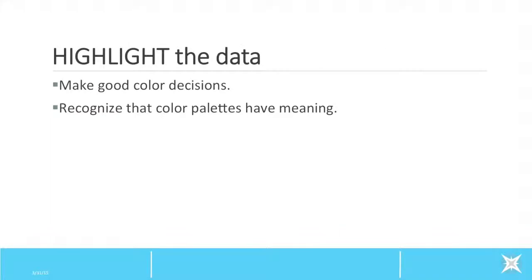Step 2: Highlight the data. In designing graphs, you need to make good color decisions and recognize that color palettes have meaning. Our brains intuitively recognize differences in color, size, shape, hue, orientation, and attach specific meanings to them.